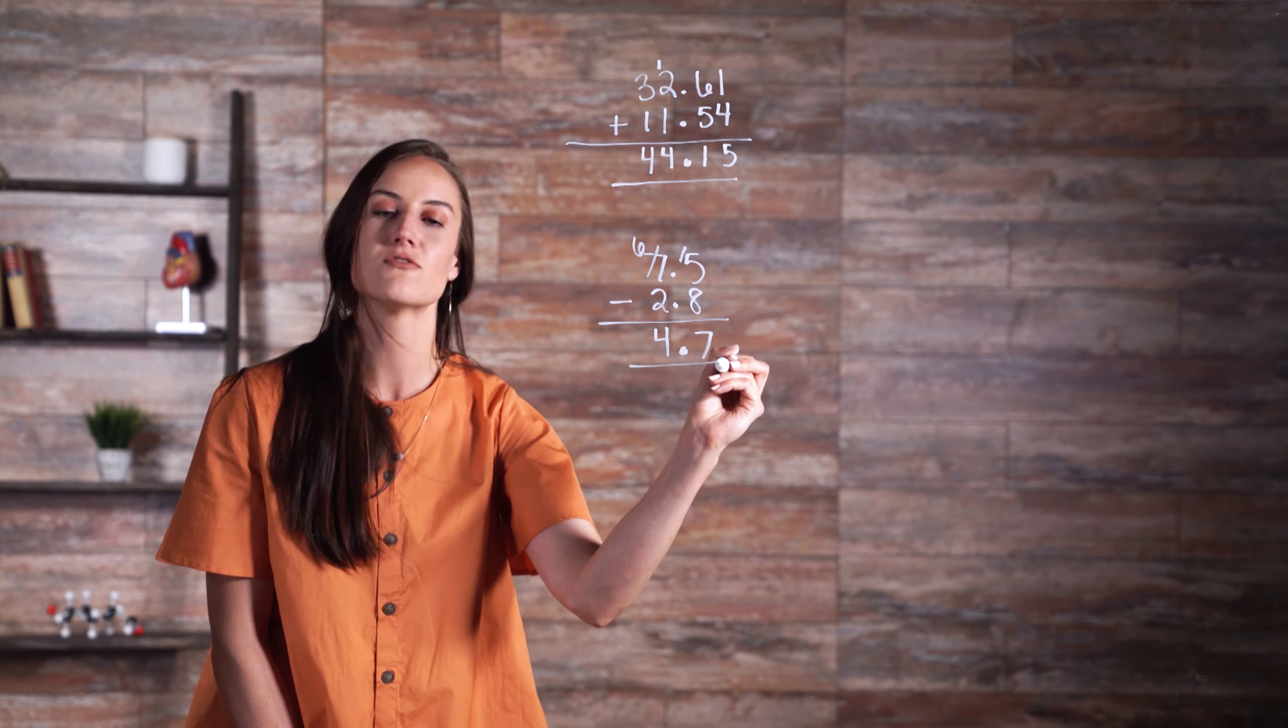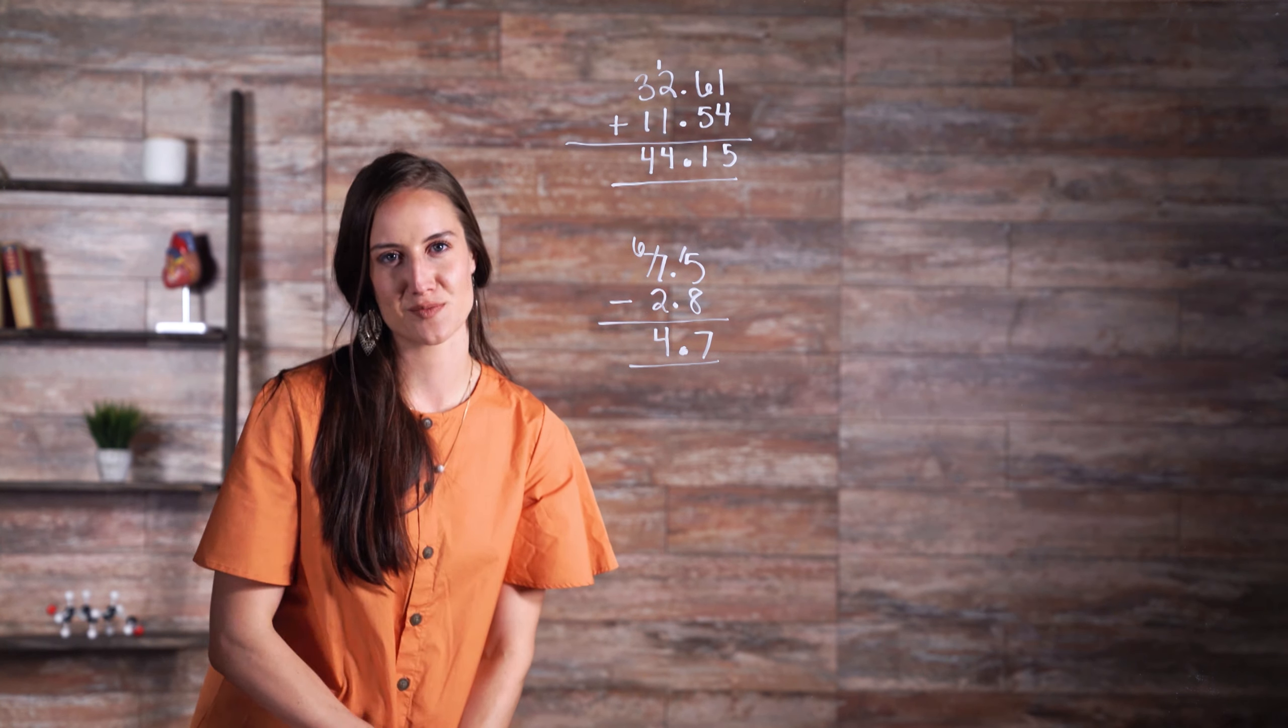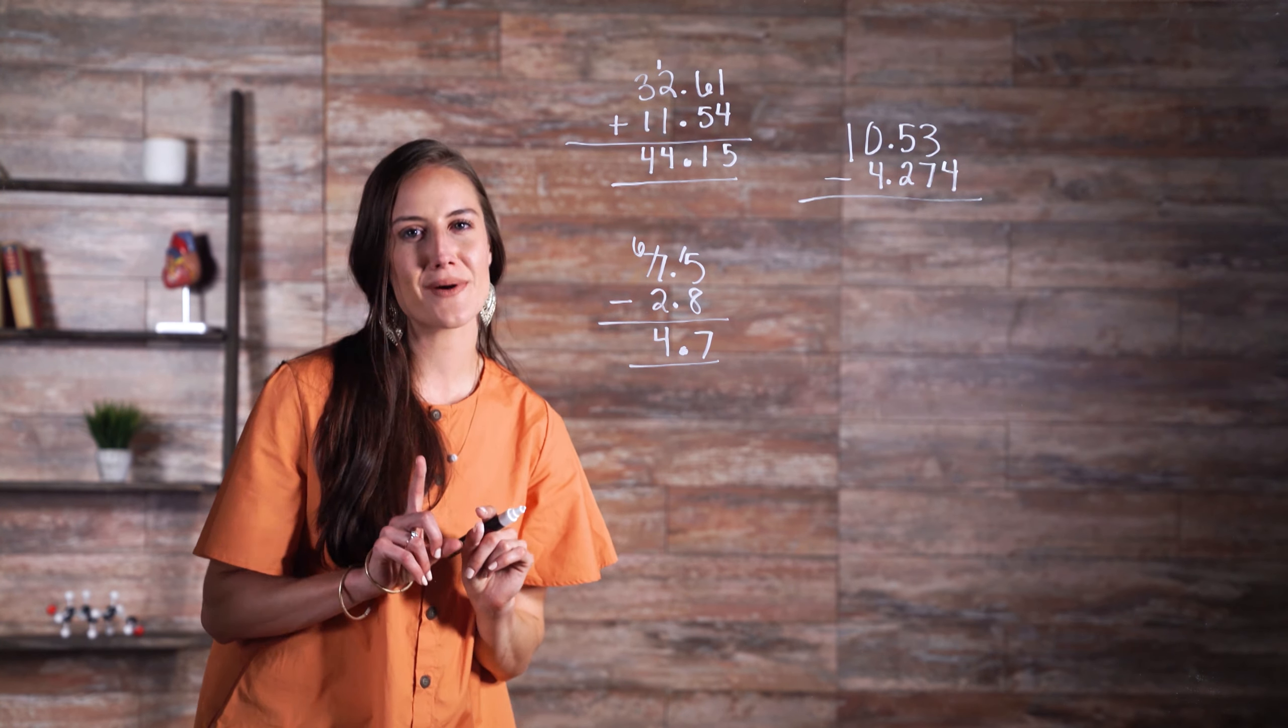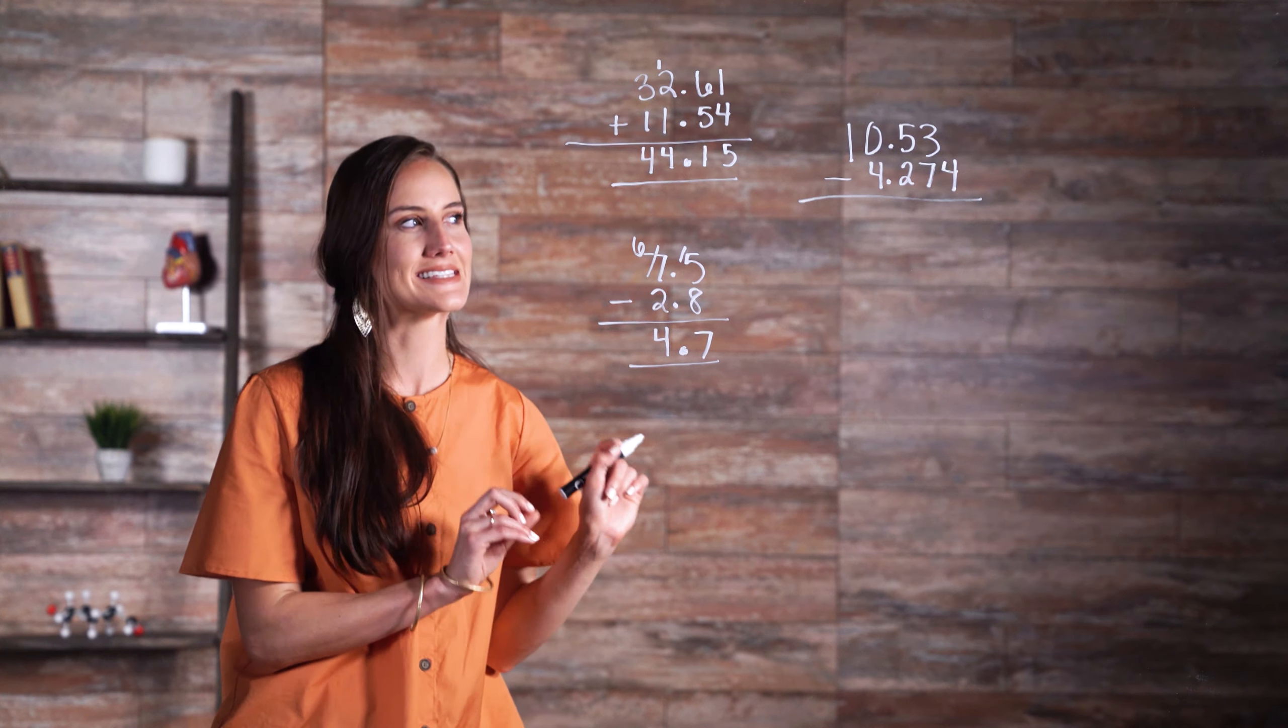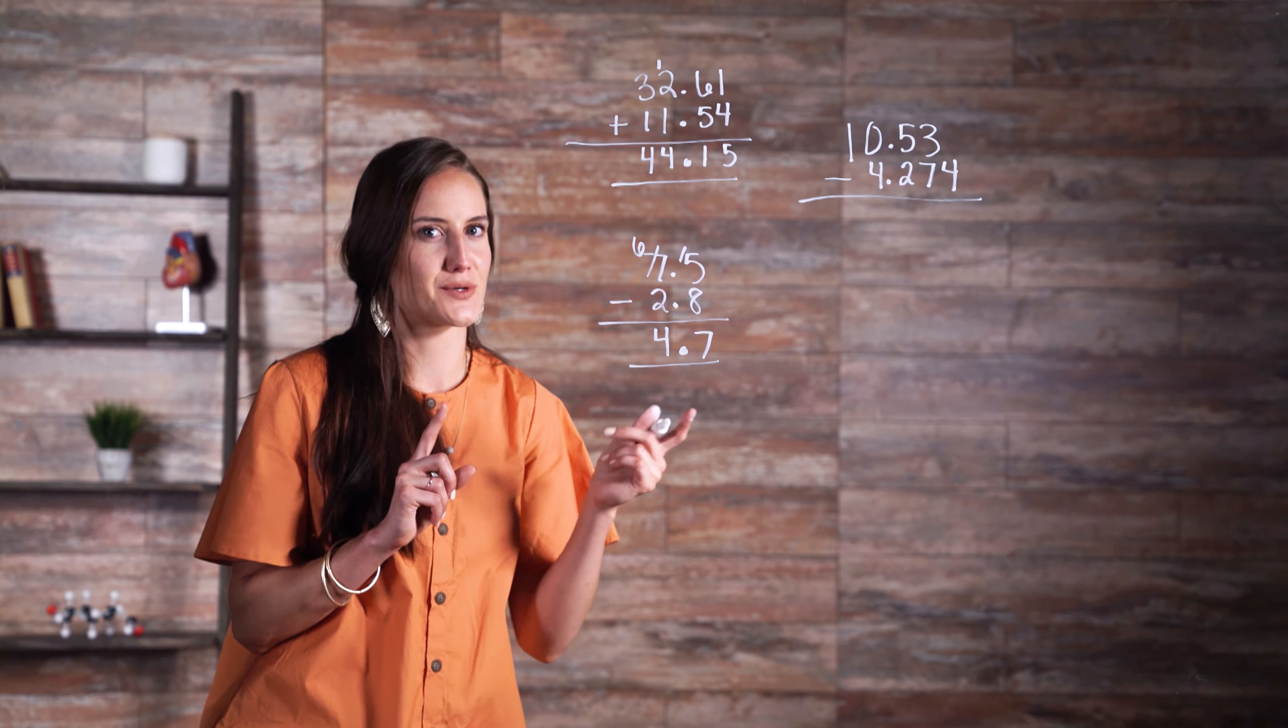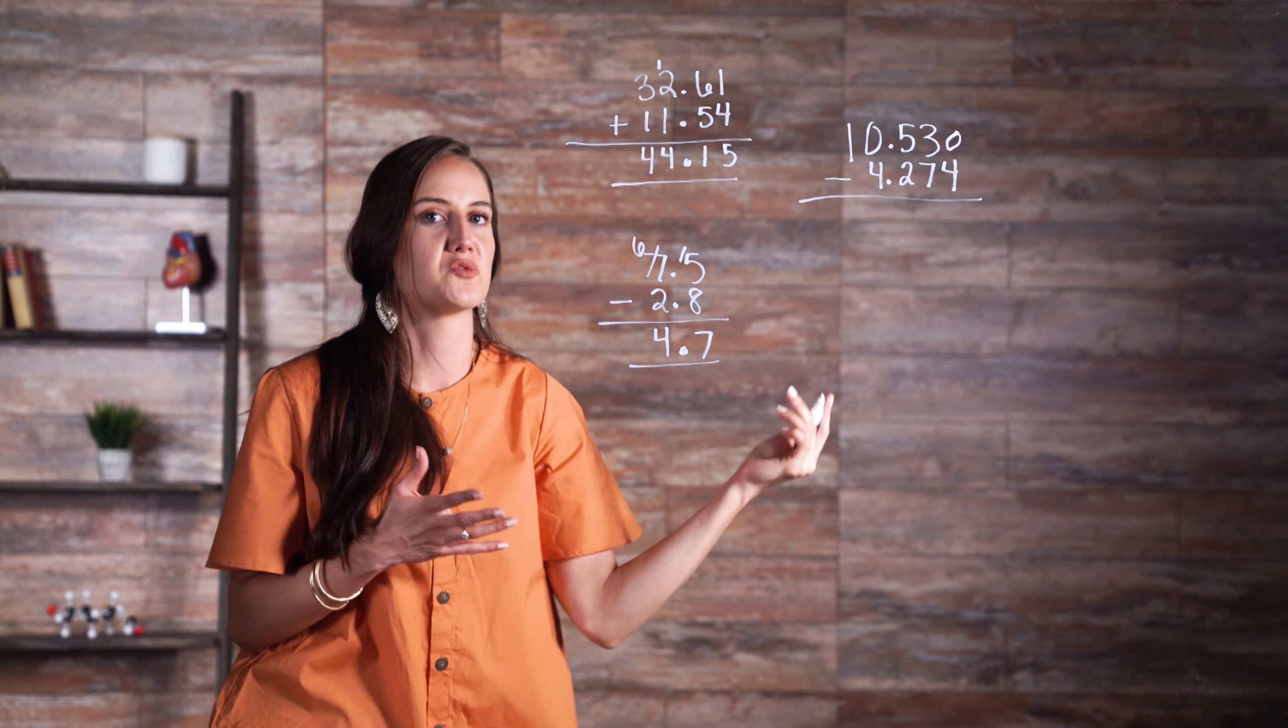Finally, let's do one more subtraction problem. Once again, we line up our two numbers, making certain that our decimal points are in the same position. You may want to add zeros to balance out, so it just feels like it's full there, which is fine.